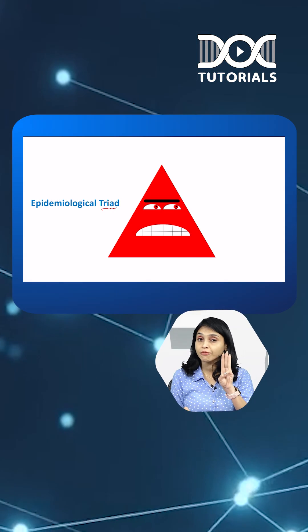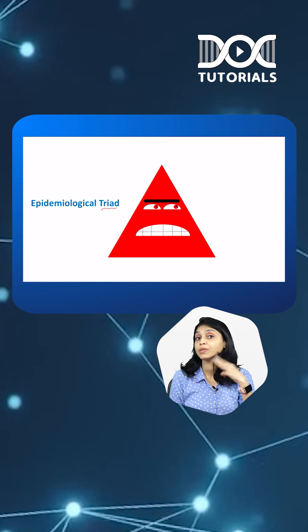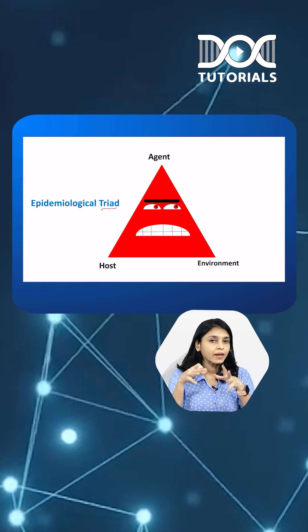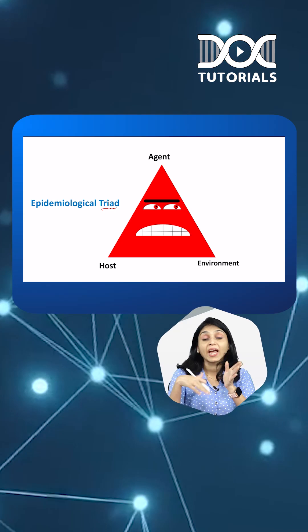As the name indicates, triad means there are three factors which are important for disease to develop, which are agent, host, and environment. That means there has to be interaction between agent, host, and environment for any disease to develop.